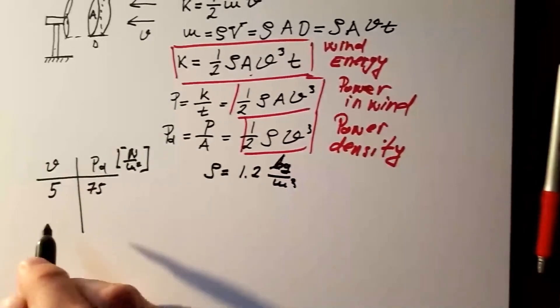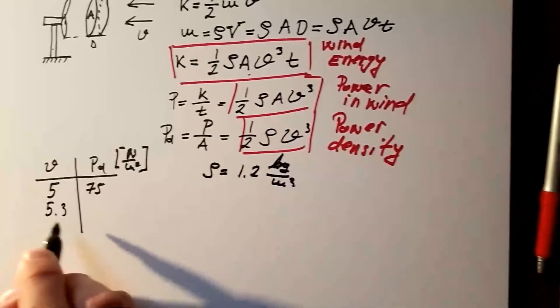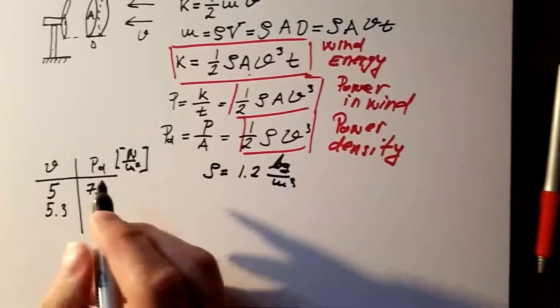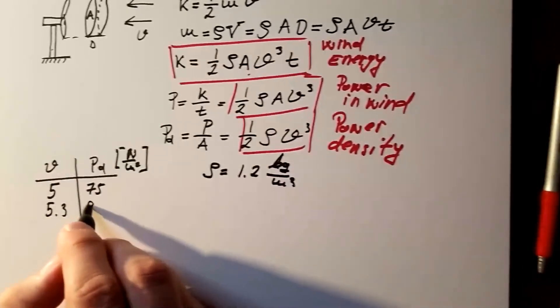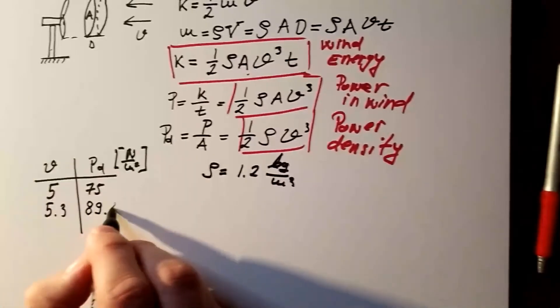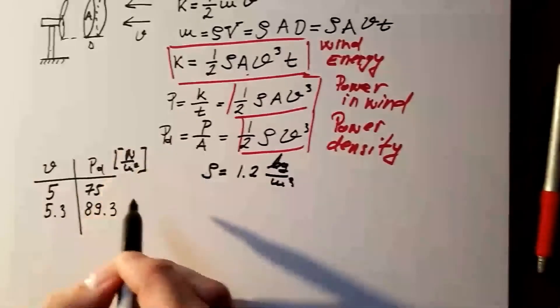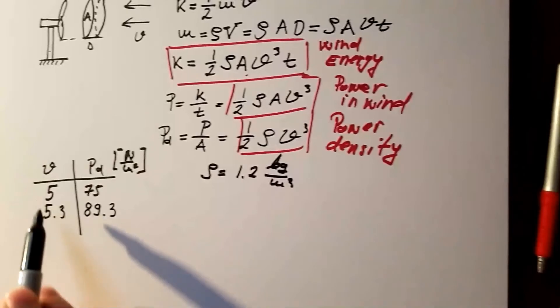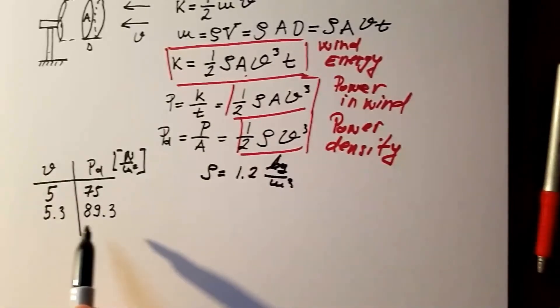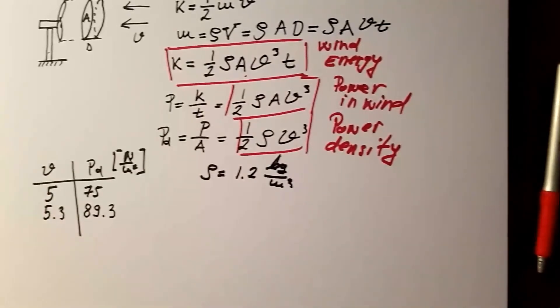Now, look at this, guys. If I have just slightly stronger wind, 5.3 meters per second, only 0.3 meters per second difference, I will end up with power density in wind that is 89.3 Watt per square meter. You can see that slight change of wind speed results in significant, almost 90 Watt per square meter, significant change of power density.